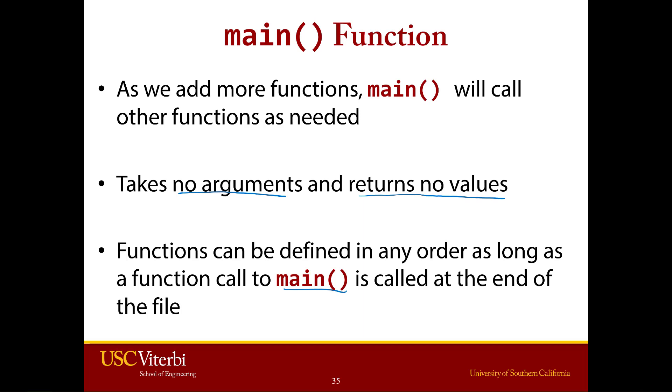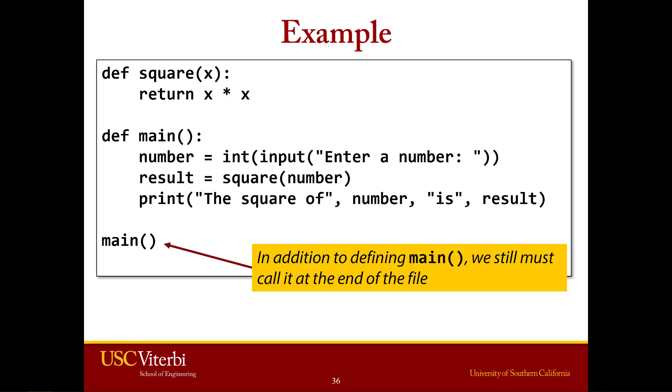So essentially, what we end up having is code that from now on is going to look like this. So we're going to define a function. We might have many other functions. You might have five or six functions all defined. You're also going to define main. And notice right here, so here's our square function. And inside of main, we call that function. And we might call any other function that we define. And then at the very end of our code, we will actually execute the call to main. And at that point, our program will then start.